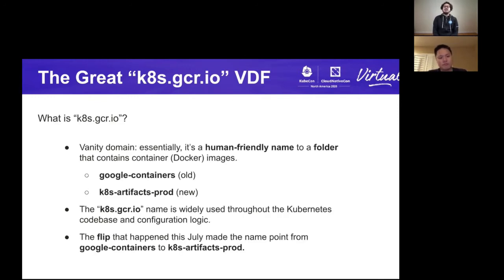So what is k8s.gcr.io? It's a vanity domain, or a human-friendly name, that essentially points to a folder within a Google Container Registry. In the before times, we were looking at gcr.io/google-containers. And today we're pointing to k8s-artifacts-prod. So why a vanity domain name? This allows us to make infrastructural changes behind the scenes with minimal and hopefully no downtime to operations that depend on these images. That flip is something that hopefully you didn't notice — it happened in July.